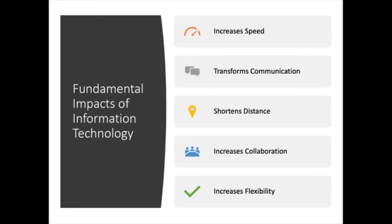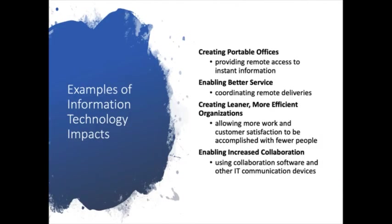Each of the examples we'll cover fall under the umbrella of these five fundamental ways IT improves business. For example, IT has created the ability to work remotely, creating portable or movable offices — giving us greater mobility to do business not only in office buildings, but from a home office, a coffee shop, a library, a sailboat, and all sorts of places unthinkable as business locations previously.